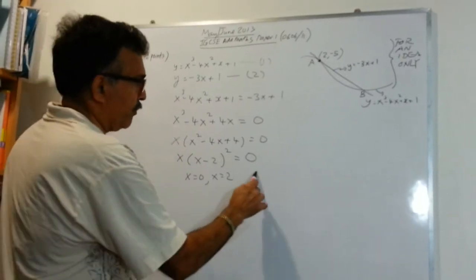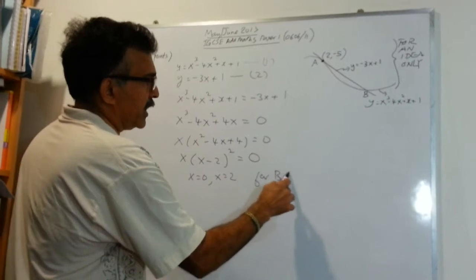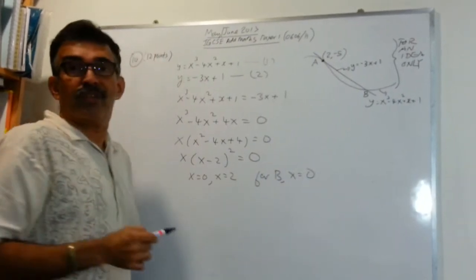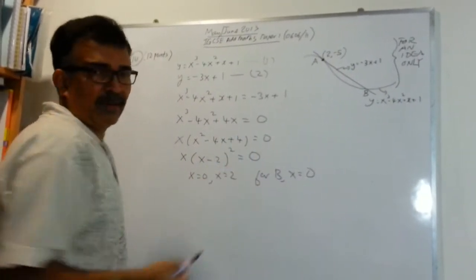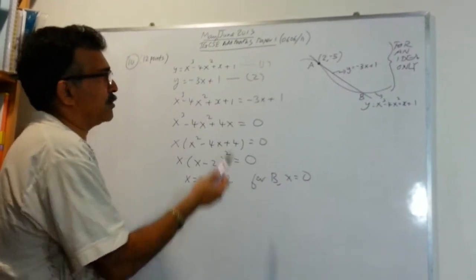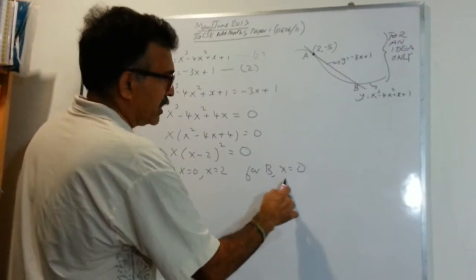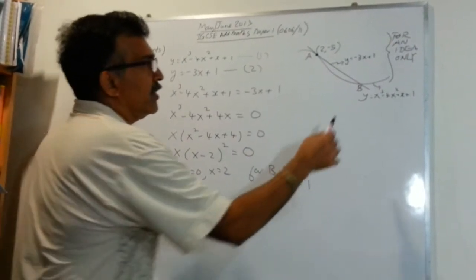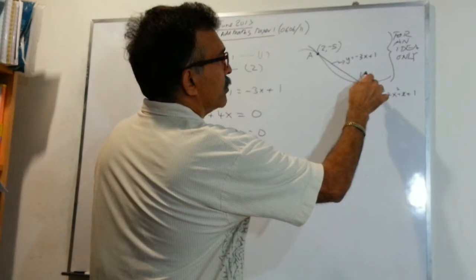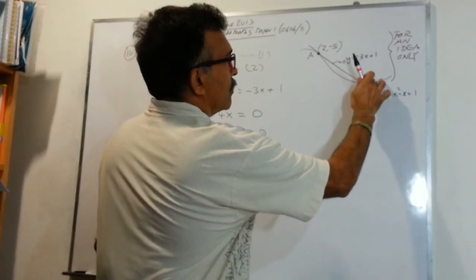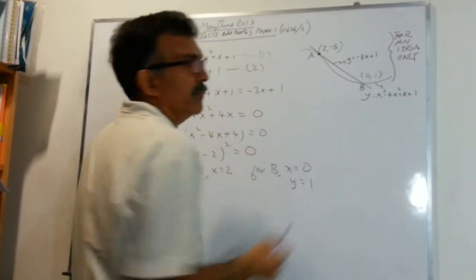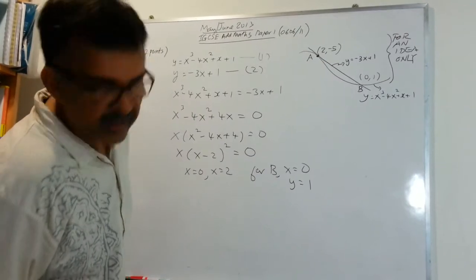the x value must be 0. So to find the y value for B, it's not difficult. Just plug into any one of the equations 1 or 2 and when you plug it, you will get the y value is 1. Therefore, the coordinates of B will be 0, 1. Great.